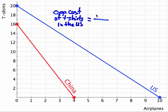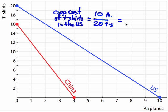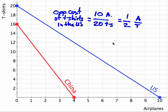If the United States chooses to produce 10 airplanes, it will not produce 20 t-shirts. Dividing 10 by 20 produces one half of an airplane per t-shirt.